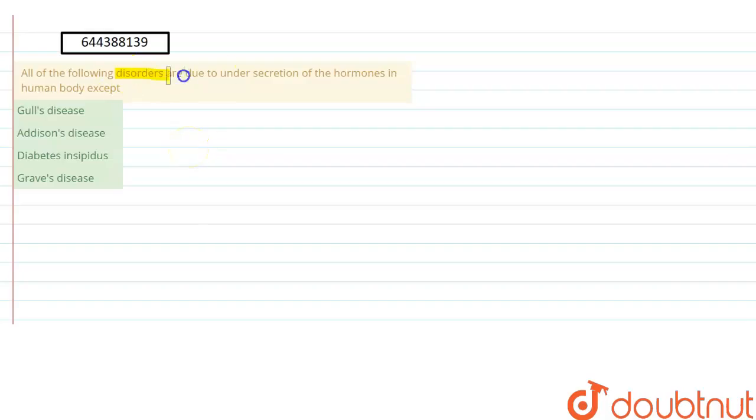of the following disorders are due to under secretion of hormones in human body, except. So from these given options, we need to tell which disease is not caused by the under secretion of a hormone. Let's see the options one by one.